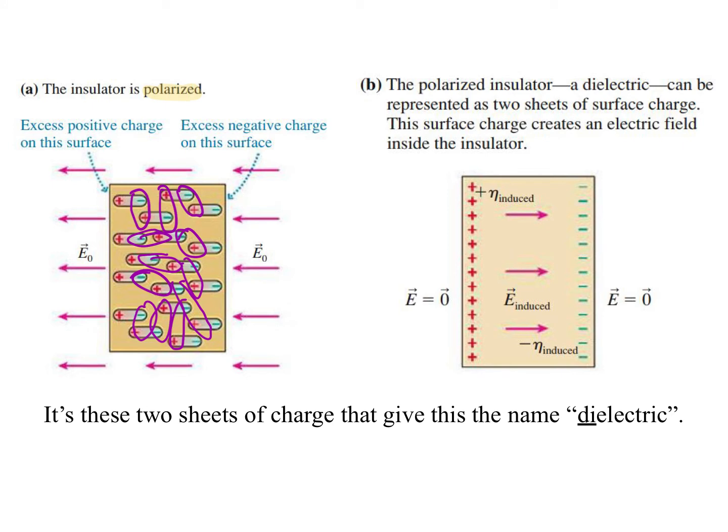That induces a surface charge with the weird use of eta that the textbook likes. It induces an electric field as if these were like a little mini capacitor themselves, two sheets of charge separated by some distance. So there's an induced charge this way.